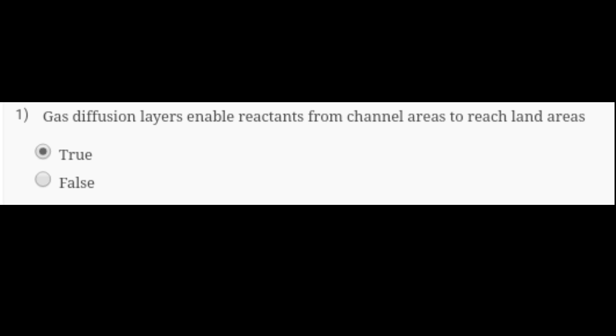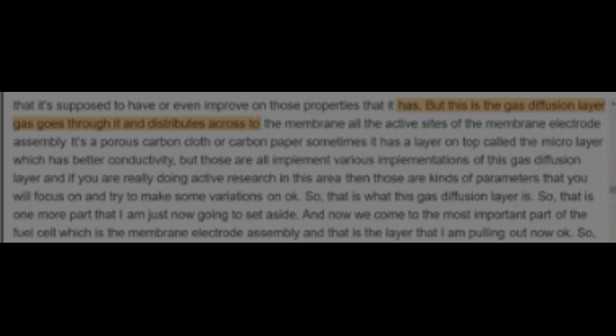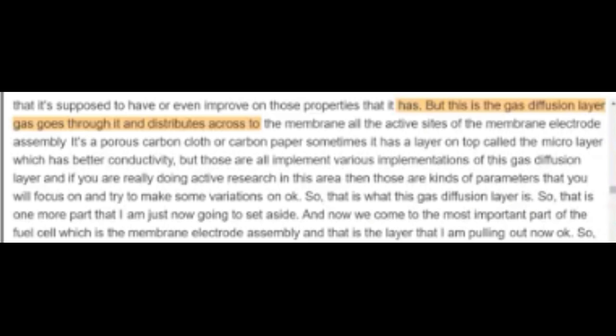Taking the first question of assignment 12: gas diffusion layers enable reactants from channel areas to reach land areas. It is absolutely true. You can see in this picture it is clearly written in the highlighted line: the gas diffusion layer, gas goes through it and distributes across. So the answer is true.